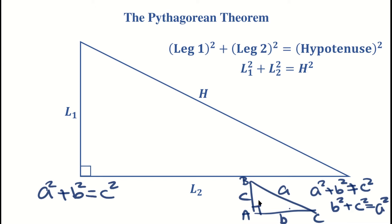So in order not to fall for this error and attachment to the letters A, B, and C, it's safer to talk about the two legs of a right triangle — the two sides that form the right angle — and the side opposite the right angle, which we call the hypotenuse. It's safer to remember the Pythagorean theorem as: the sum of the squares of the two legs equals the square of the hypotenuse.